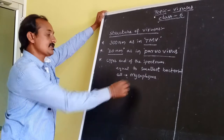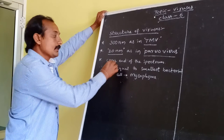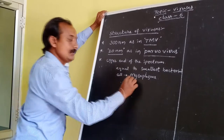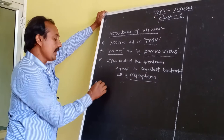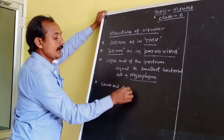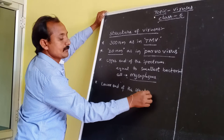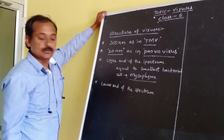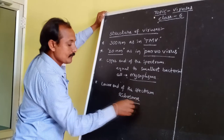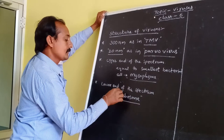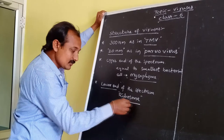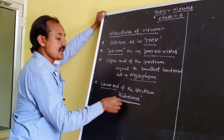Mycoplasma is the smallest bacteria. The lower end of the virus size spectrum is equal to the size of the smallest cell organelle, the ribosome.